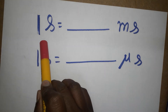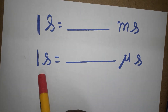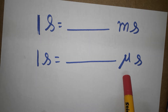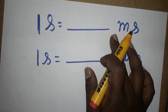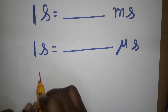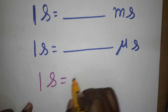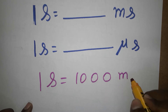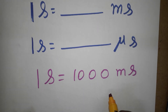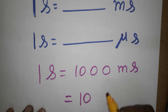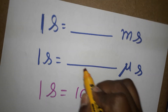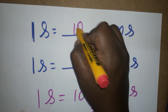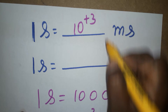Today we are going to learn: one second is equal to how many milliseconds, and one second is equal to how many microseconds. First, one second is equal to one thousand milliseconds. We can write this as 10 power 3 milliseconds, because thousand is 10 into 10 into 10, which is 10 to the power 3. So one second equals 10 power 3 milliseconds, or simply one thousand milliseconds.